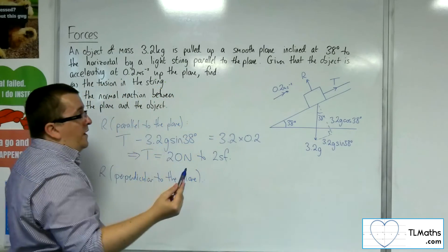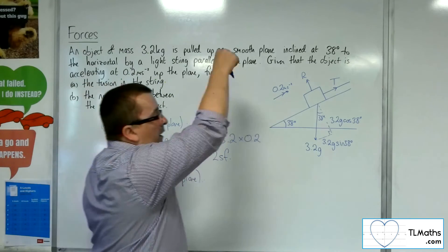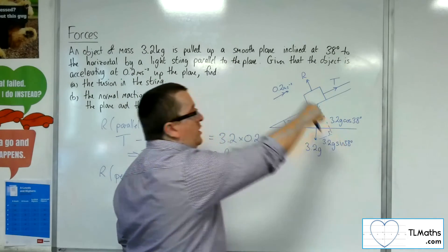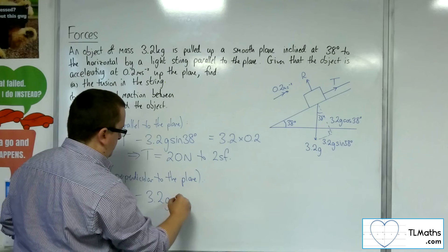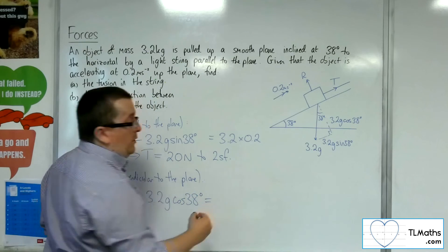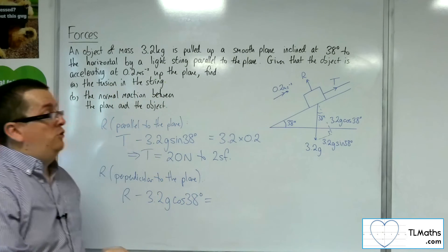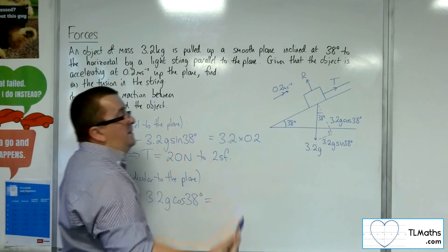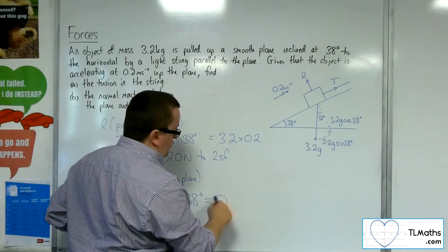So what have I got? Well, I've got R working against me. I've got the 3.2g cos 38. Now, that's got to be equal to the mass times the acceleration. However, the block isn't accelerating perpendicular to the plane. It's only accelerating parallel to the plane. And so this will be 0.